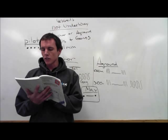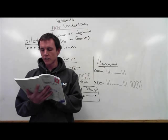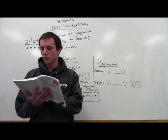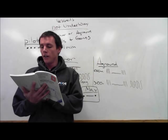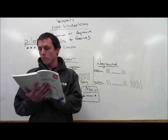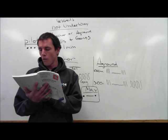A power-driven vessel which takes action in a crossing situation in accordance with subparagraph A2 of this rule to avoid collision with another power-driven vessel shall, if the circumstances of the case admit, not alter course to port for a vessel on her own port side.